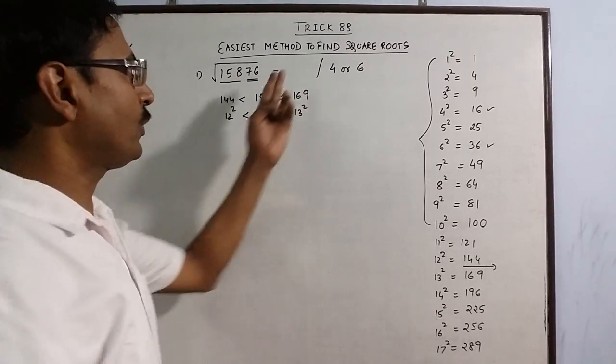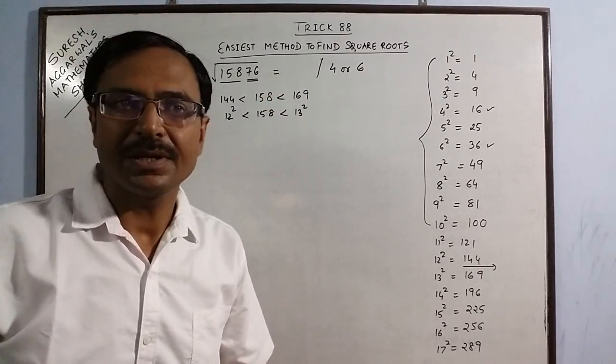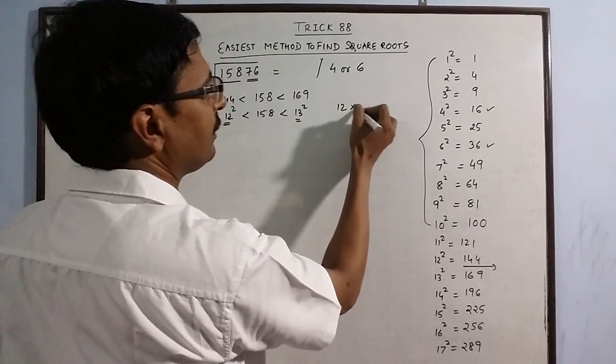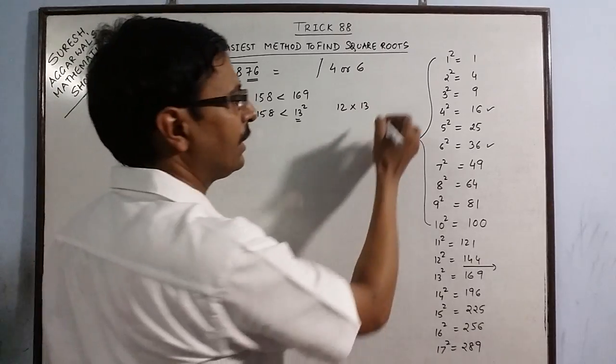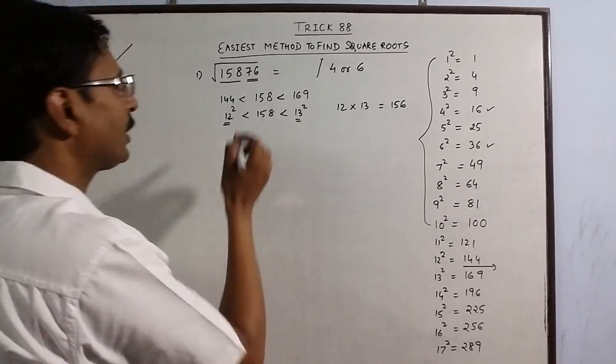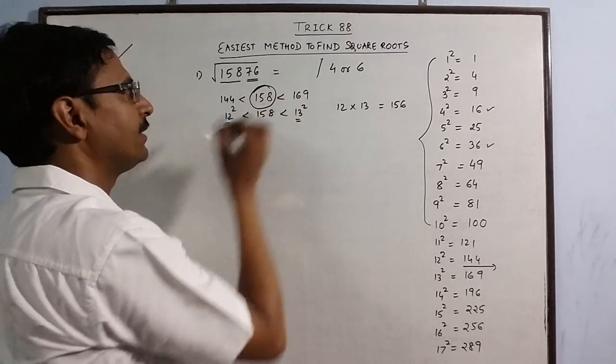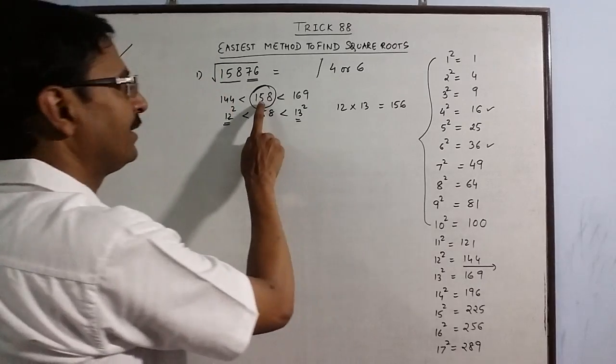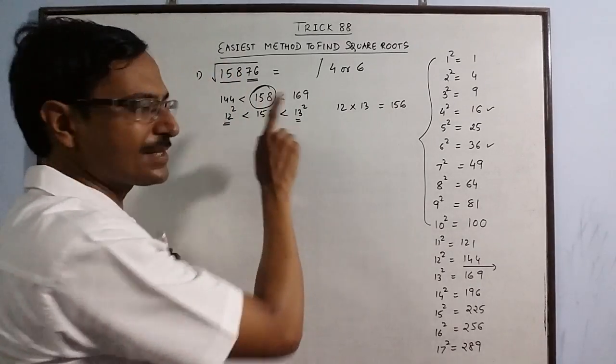So what you do for the remaining part is just multiply 12 and 13. If you find a product of 12 and 13, it will be 156, and your number 158 is greater than 156.